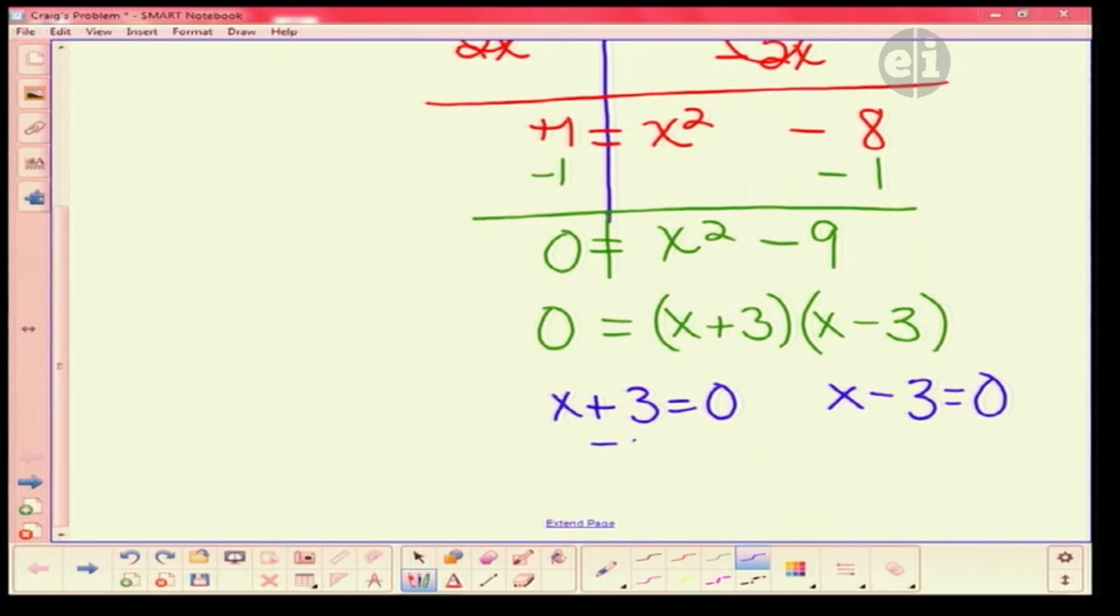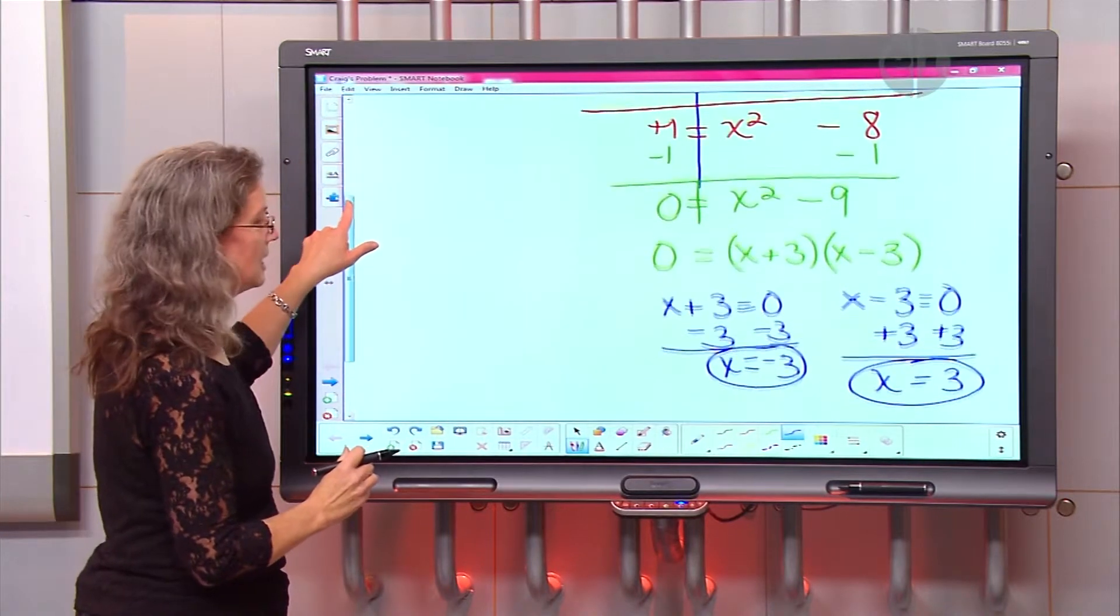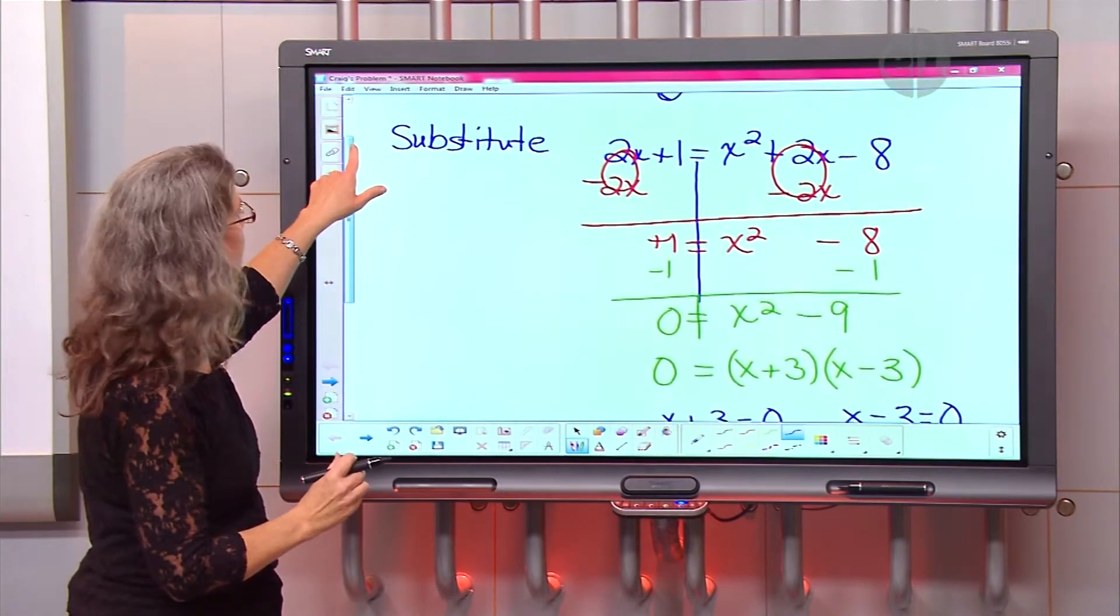So on this one, I'm going to take away 3 on both sides. So I have x is equal to a negative 3. That's one answer. And then I'm going to add 3 over here. And I have x is equal to a positive 3. So my two answers for x is a negative 3 and a positive 3.